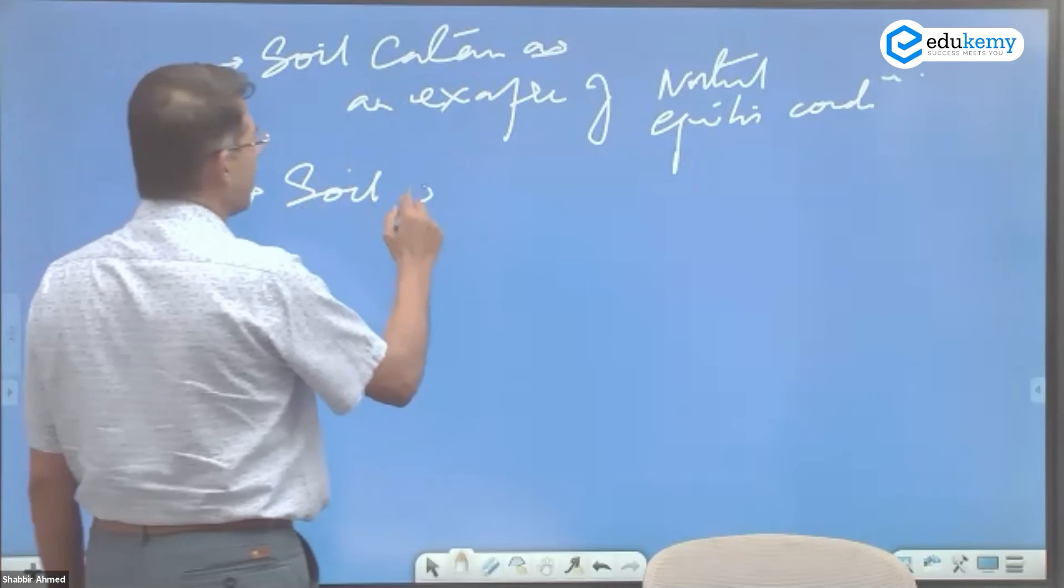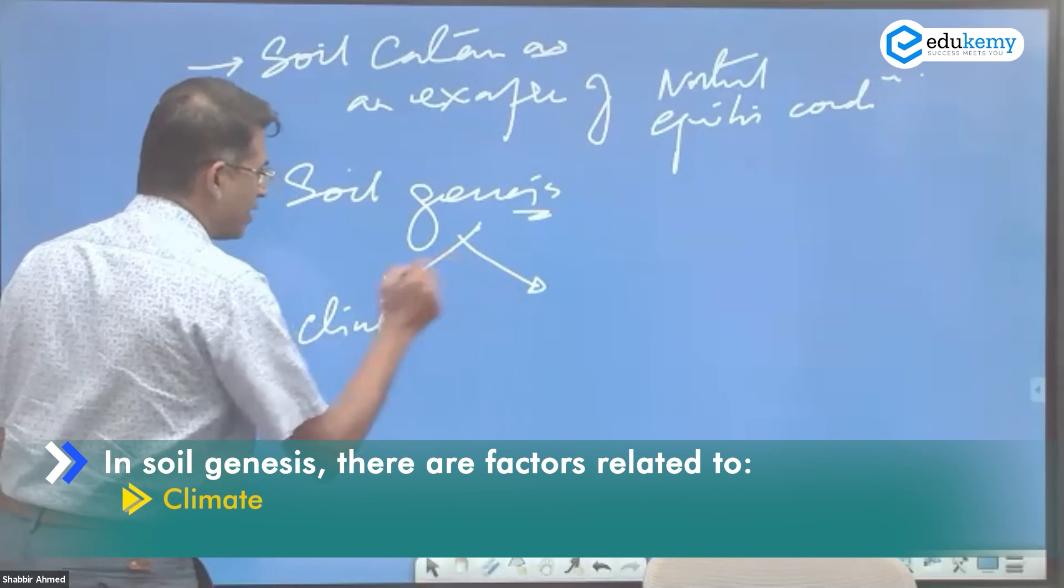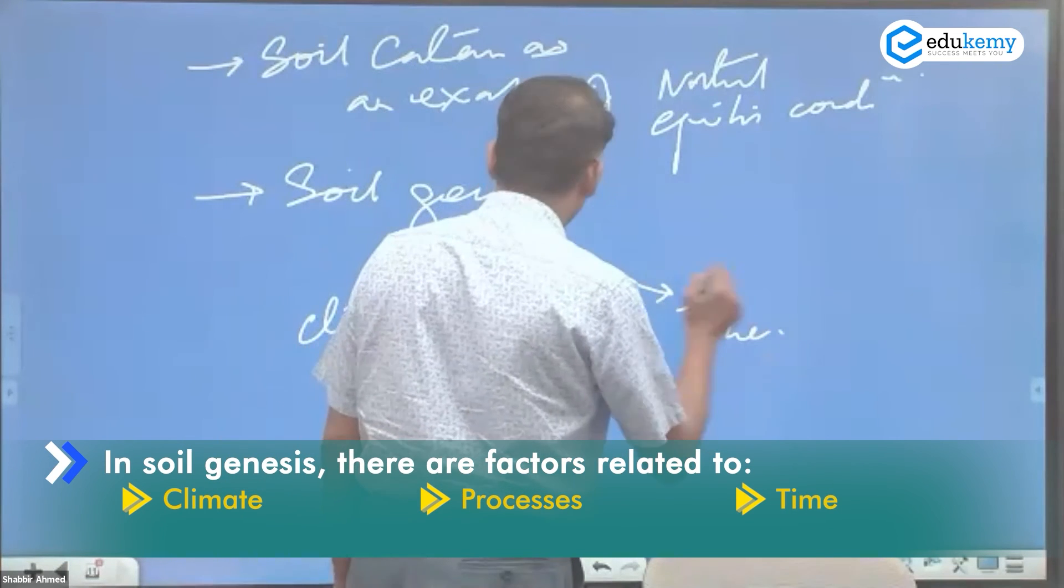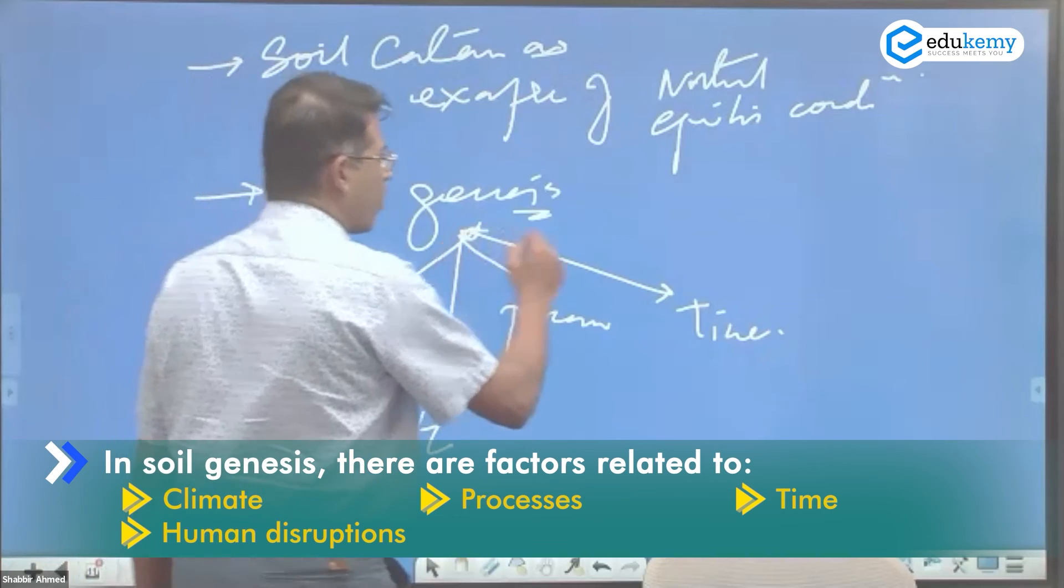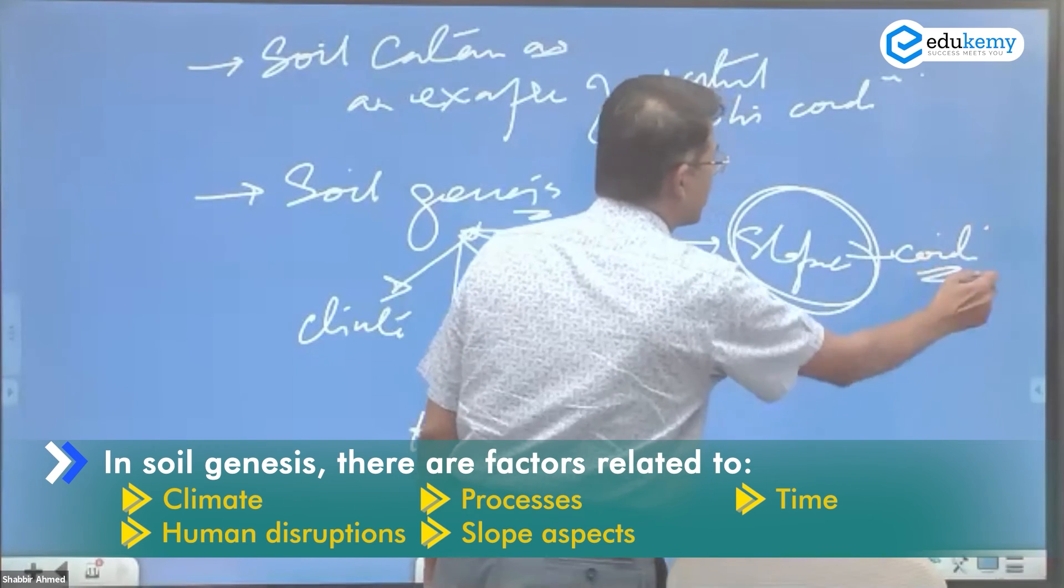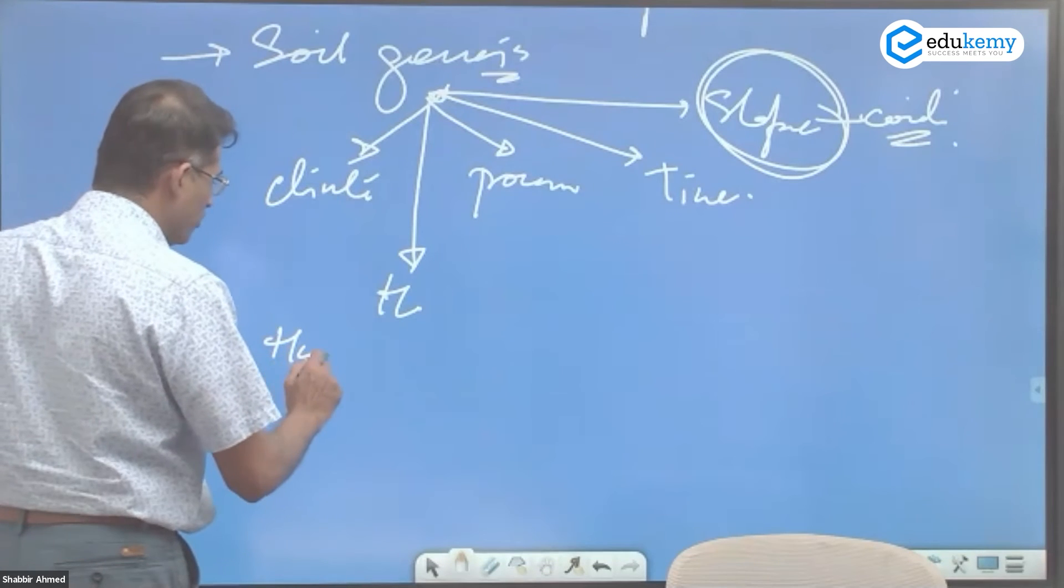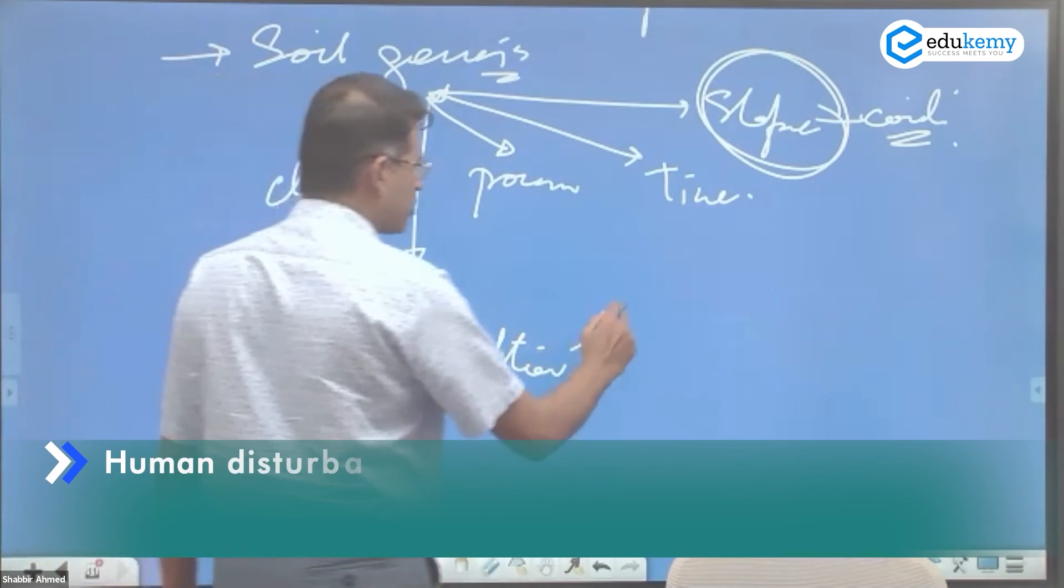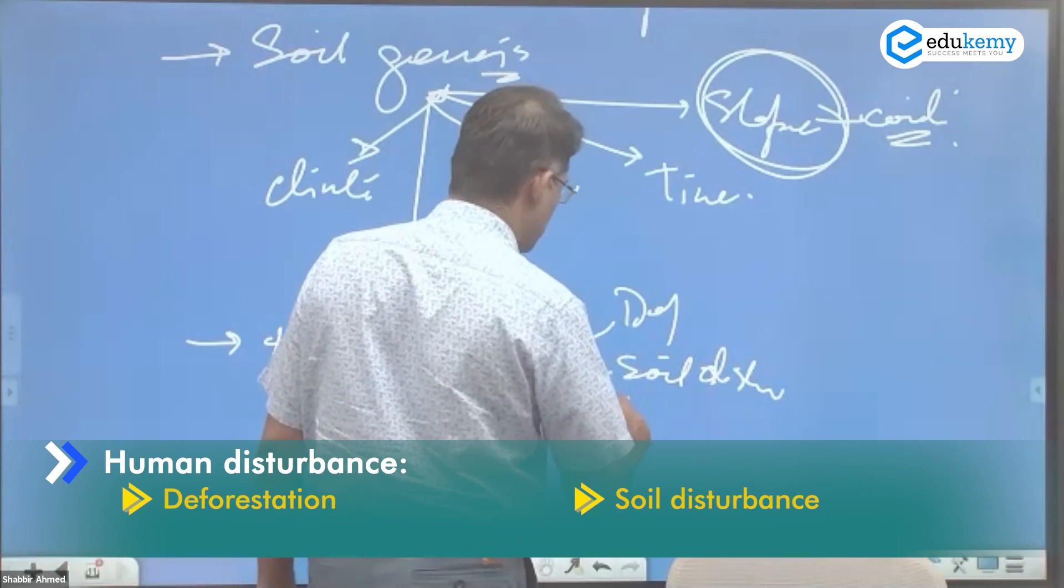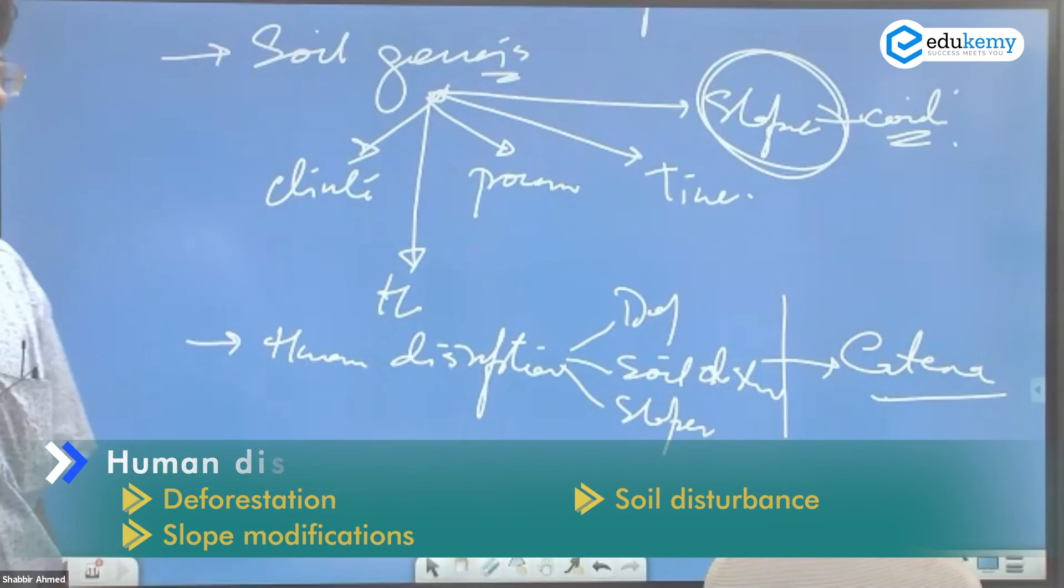When you're discussing soil genesis, there are factors of climate. There are factors related to processes. There are factors related to time. Factors related to human, whatever. So what you can add is the slope aspects. The slope conditions can also impact soil types. And then do talk about human disruptions in terms of deforestation, in terms of soil disturbance, in terms of slope modifications, which can impact the natural soil catena.